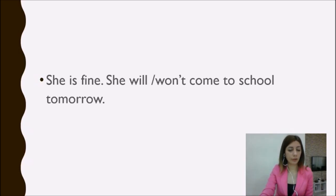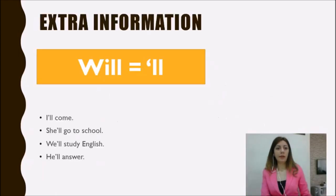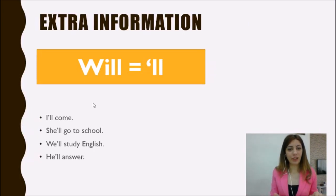Thanks for watching! I want to finish with a little extra information. Will'in kısaltılmış hali de var - it can be shortened to apostrophe-ll. There's no difference in meaning, only in pronunciation. Let's look together: I'll come, she'll go to school, we'll study English, he'll answer. The meaning is still will, still acak/ecek.